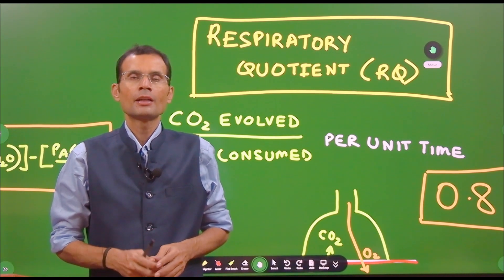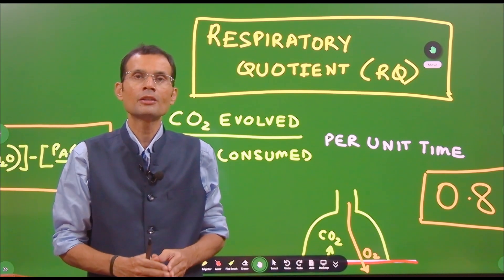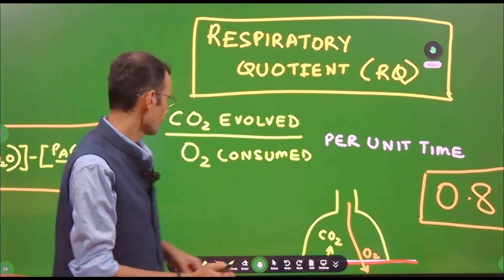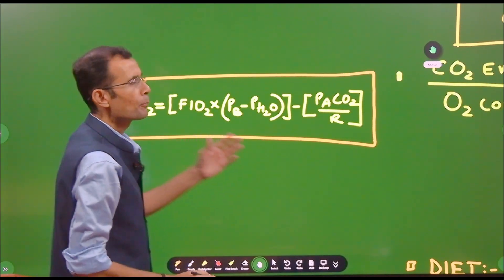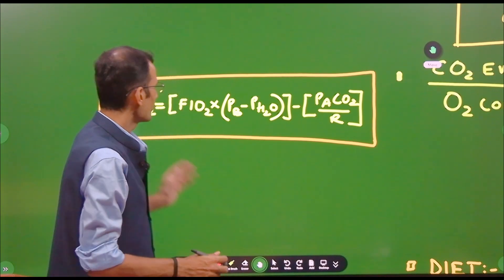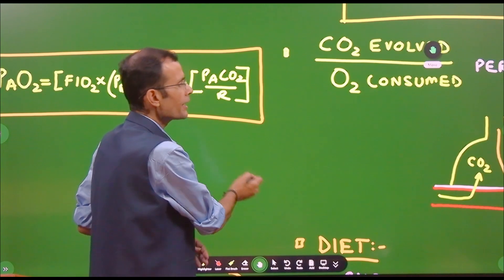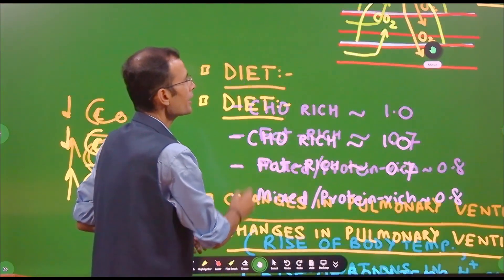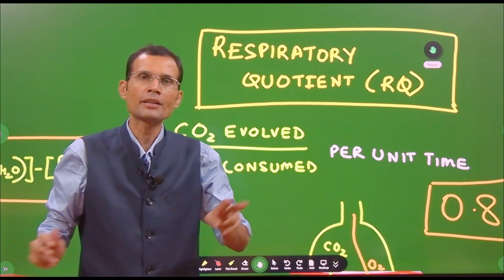Imagine a patient is being given assisted ventilation on a ventilator and you want to calculate the alveolar PO2. You will use the alveolar air equation, and an important component of that equation is R — the respiratory quotient. Or consider a diabetic patient where you would want to know the metabolic status: whether carbohydrate metabolism, fat metabolism, or where it is tilting.